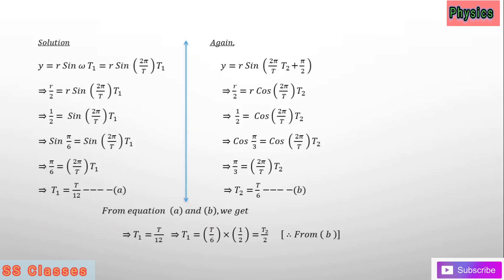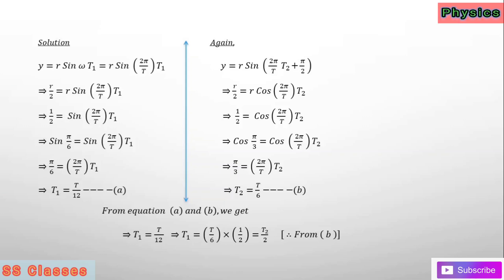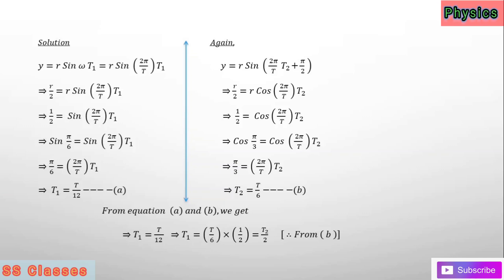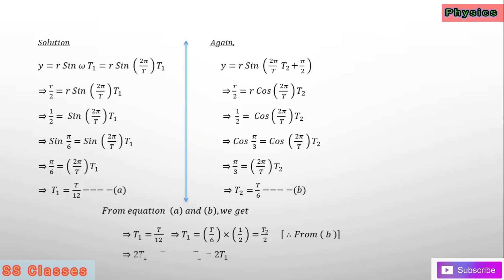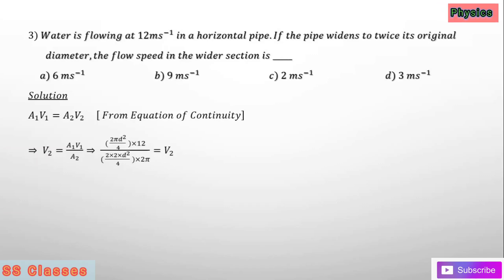We get one by two equals sine of (2π/T) into t1, giving t1 equals T by 12 — that is equation A. Again, y equals r sine of (2π/T into t2 plus π/2). Doing the same process, you get t2 equals T by 6 — equation B. From equations A and B, t2 equals two times t1.